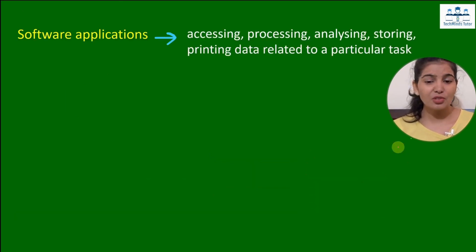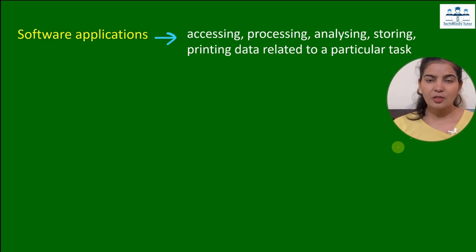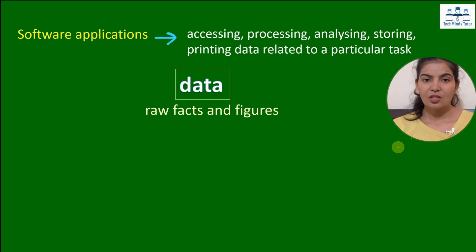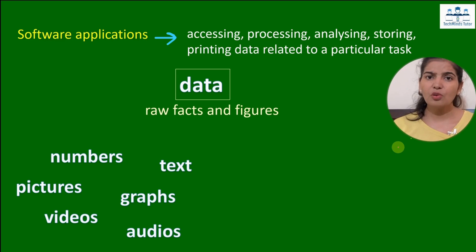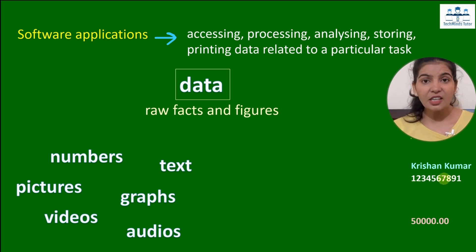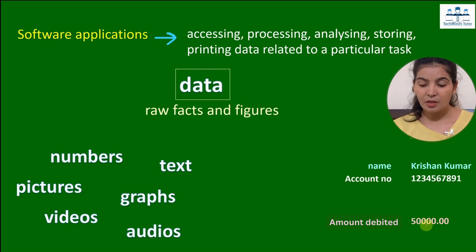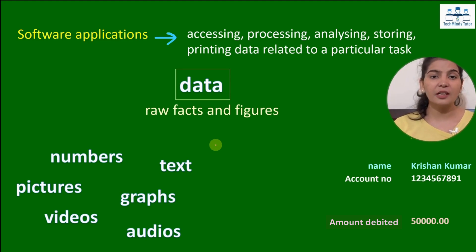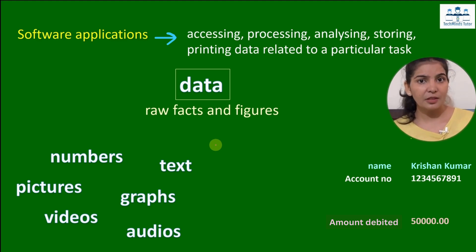We can say that the purpose of a software application is accessing, processing, analyzing, and storing the data related to a particular task. Before we start programming, we must understand what data is. Data is raw facts and figures — numbers, text, pictures, graphs, videos, audios. It is called raw facts and figures because on its own, a name or a number doesn't make sense. But if I say this is the account number of Krishna Kumar and this is the amount debited, now this data is making sense — it has turned into meaningful information.